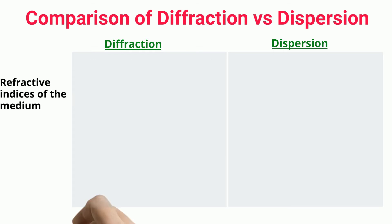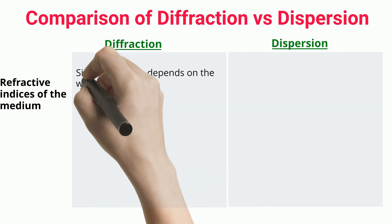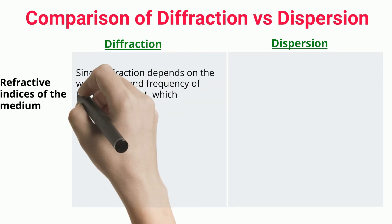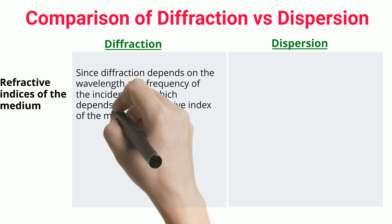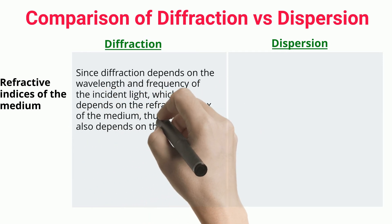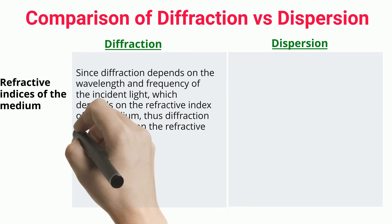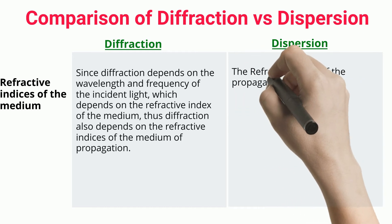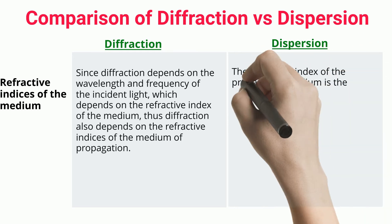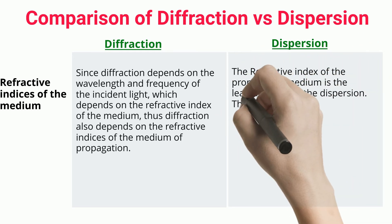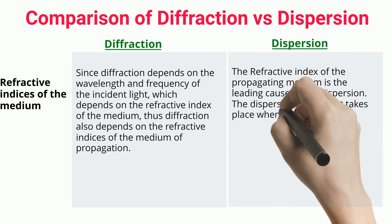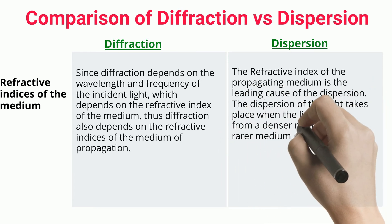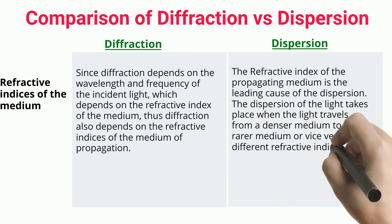Refractive indices of the medium: Since diffraction depends on the wavelength and frequency of the incident light, which depends on the refractive index of the medium, diffraction also depends on the refractive indices of the medium. The refractive index is the leading cause of dispersion; dispersion takes place when light travels from a denser medium to a rarer medium or vice versa.